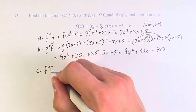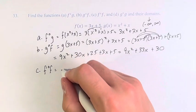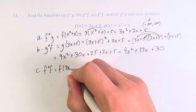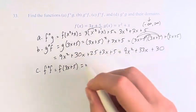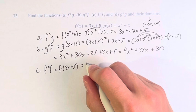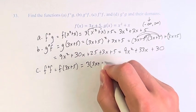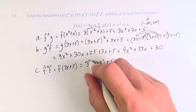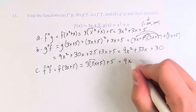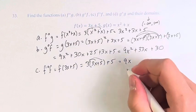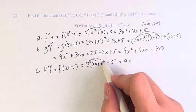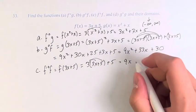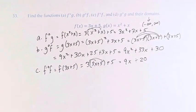C, f of f. So this is f of three x plus five. So we plug three x plus five into f. So three times three x plus five, plus five. Distribution: three times three is nine x, plus another three times five is plus 15, plus five. 15 plus five is 20, so you have nine x plus 20.